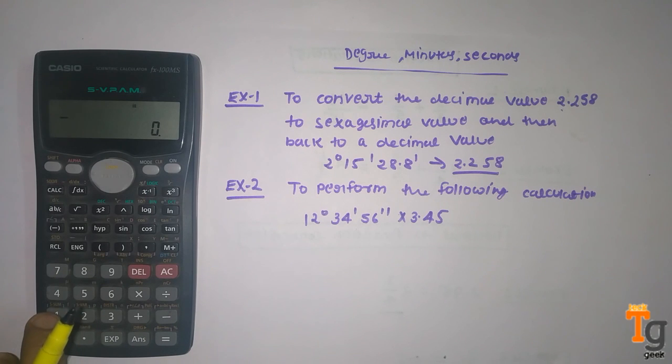So how we enter this: by pressing 12 and this button, and then 34, again this button, and 56, again this button. And I will multiply it with 3.45.